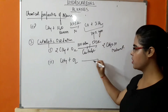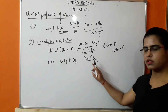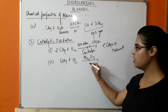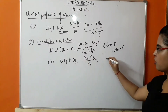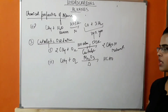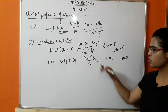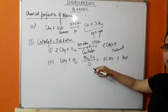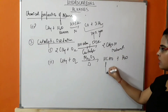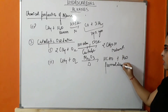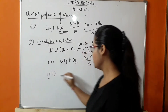Second example of catalytic oxidation: CH4 reacts with O2 in the presence of molybdenum oxide (MoO3) as catalyst with heat, resulting in formation of formaldehyde and removal of H2O. The product is different in both conditions because the catalyst is different, so the product is also different. This product is known as formaldehyde.